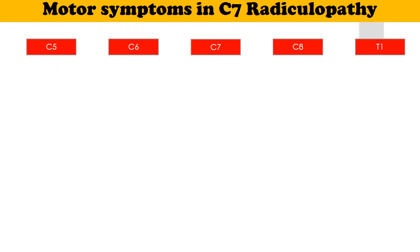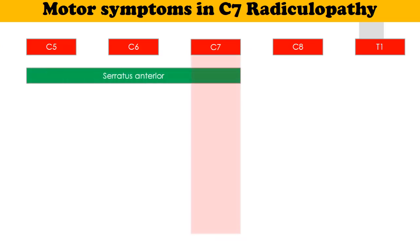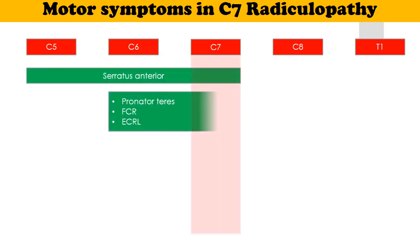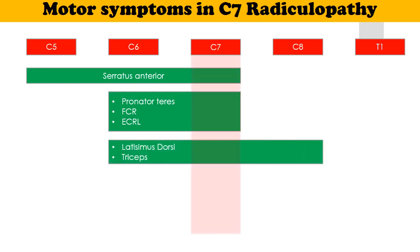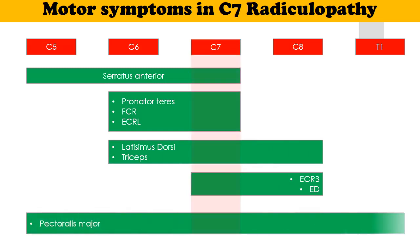The muscles which can be weak in C7 radiculopathy are as follows: serratus anterior, pronator teres, flexor carpi radialis, extensor carpi radialis longus, latissimus dorsi, triceps, extensor carpi radialis brevis, extensor digitorum, and pectoralis major.